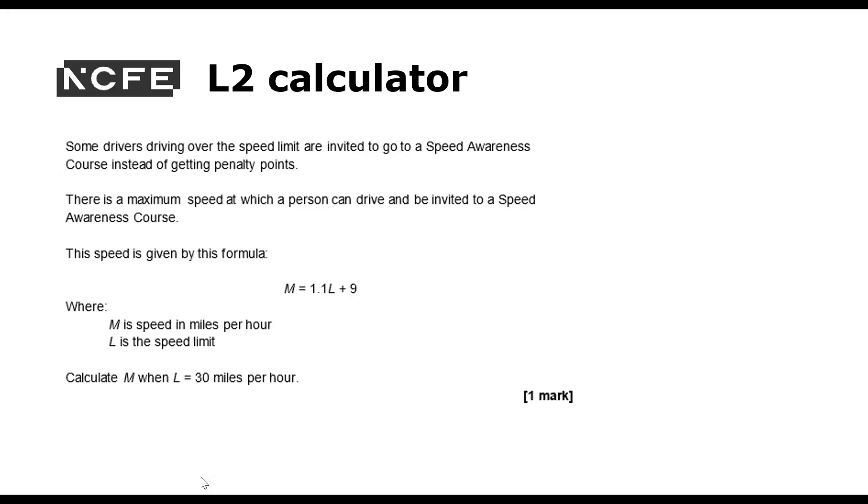We'll take a look at one more calculator question for level two. Some drivers driving over the speed limit are invited to go to a speed awareness course instead of getting penalty points. There is a maximum speed at which a person can drive and be invited to a speed awareness course. The speed is given by this formula. M equals 1.1 L plus 9, where M is the speed in miles per hour and L is the speed limit. Calculate M when L is 30 miles per hour. So this is very straightforward. I just need to substitute into the formula.